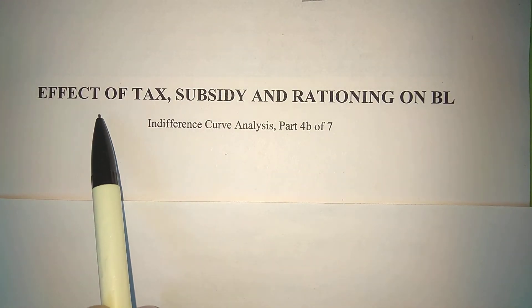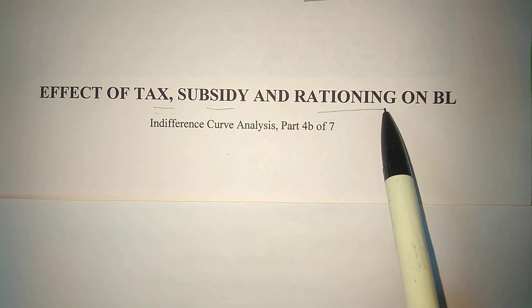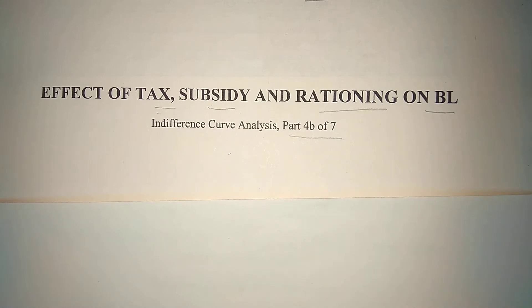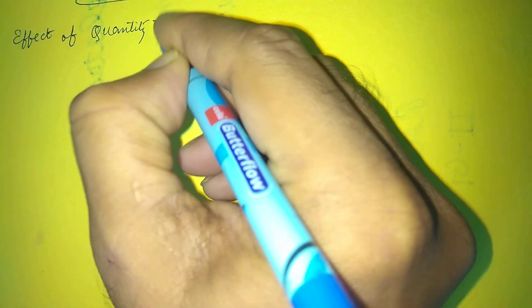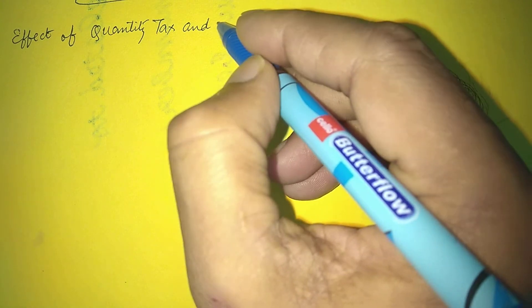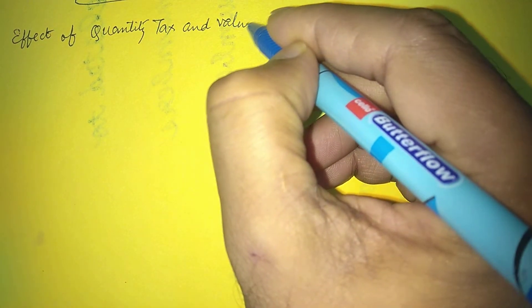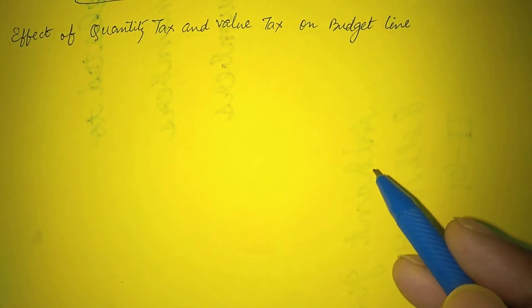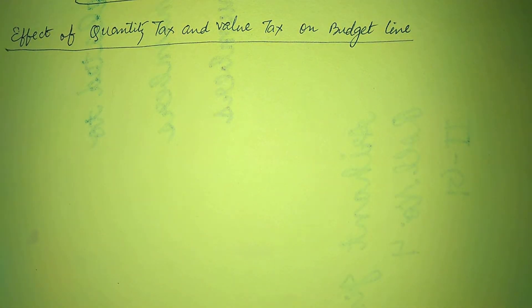In this video we will discuss the effect of tax, subsidy and rationing on the budget line. This is Part 4b of the seven videos on indifference curve analysis. First we will discuss the effect of quantity tax and value tax on the budget line.